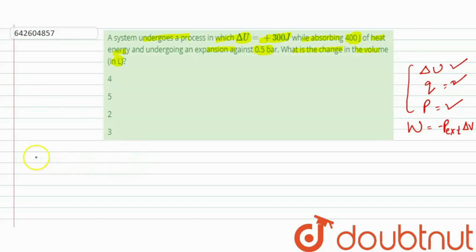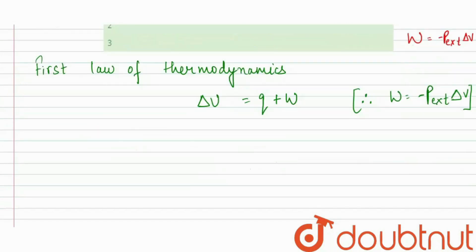This formula relates all three terms and it is our first law of thermodynamics. In the first law of thermodynamics, delta U equals Q plus W, and W equals minus P external (the pressure against expansion) into delta V. We have to calculate the change in volume, so from here we can calculate delta V.